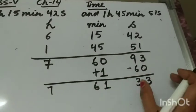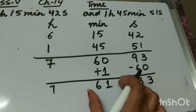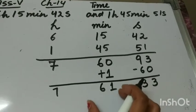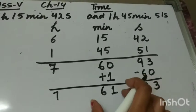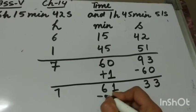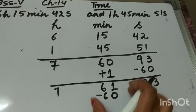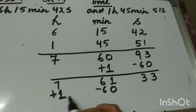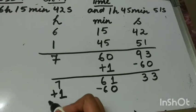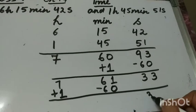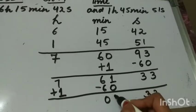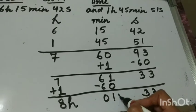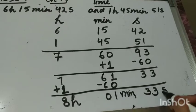The seconds are now okay because they are less than 60. Now the minutes are 61, and 1 hour is equal to 60 minutes. So we will convert 60 minutes into 1 hour — subtract 60 from the minutes and add 1 to the hours. So 61 minus 60 is 1 minute and 7 plus 1 is 8 hours. Your answer will be 8 hours, 1 minute and 33 seconds.